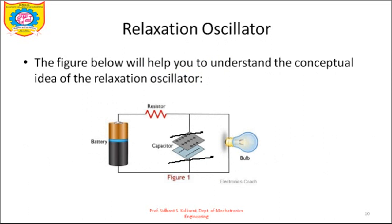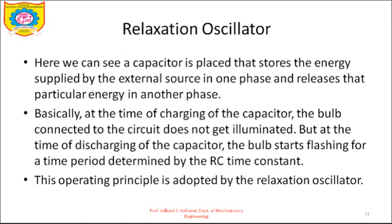To understand this conceptually, consider a circuit where a capacitor charges from the supply voltage. While charging, a connected bulb remains off. When the capacitor is fully charged, it discharges through the bulb, turning it on. The bulb then turns on and off depending on the capacitor voltage. The capacitor stores energy supplied by the external source in one phase and releases that energy in another phase — the discharging time period is determined by the RC time constant. This operating principle is adopted by the relaxation oscillator.